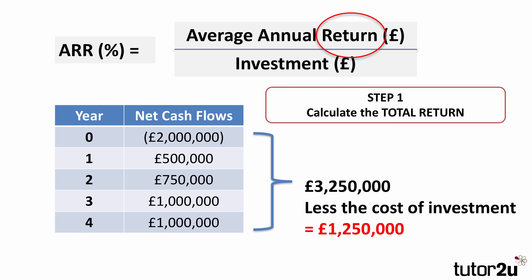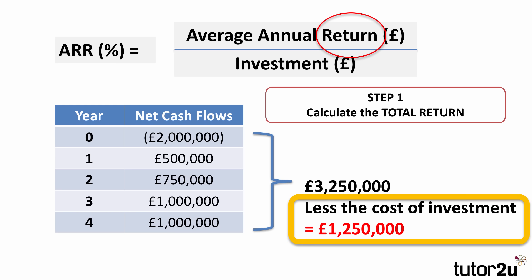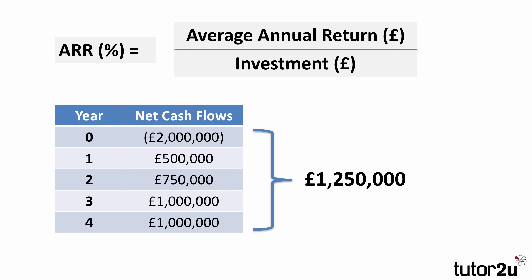But don't forget — and this is often the stage that most students forget — we need to deduct the cost of the investment, £2 million, to give us a total return of £1,250,000. That's the total return.